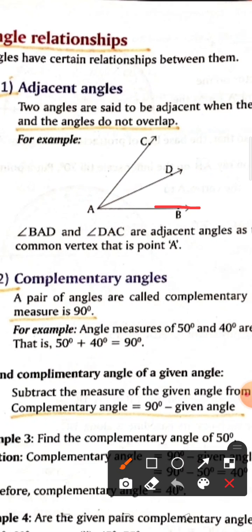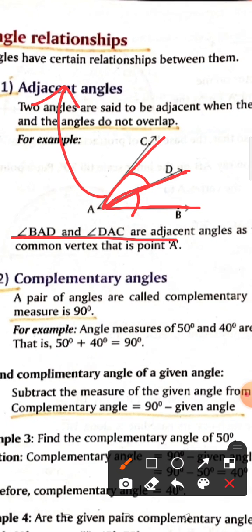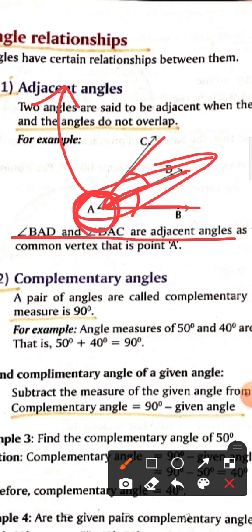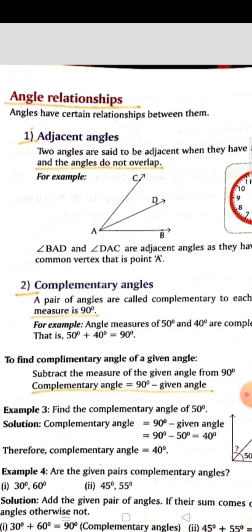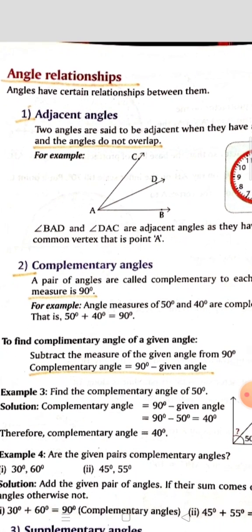From this figure, one angle is BAD and from that another angle DAC is formed. BAD and DAC are the two adjacent angles, where AD is the common side and point A is the common vertex. Now you know how to recognize adjacent angles.